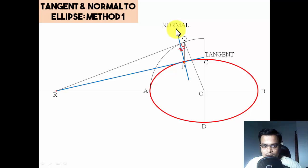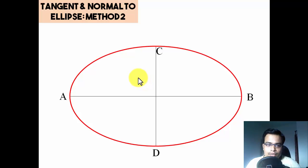That was all about method one. Let's see one more method and figure out how tangent and normals can be made by that method. So let's have an ellipse. Now for applying this method we first need to work out where the focus is. There is going to be focus one somewhere here and there is going to be focus two somewhere here.